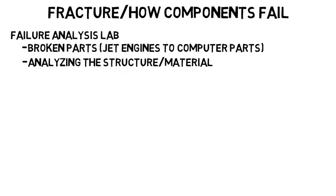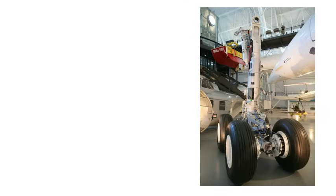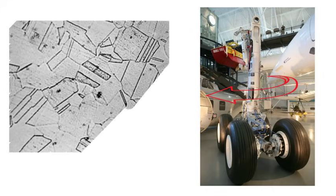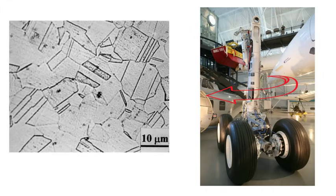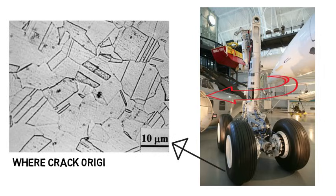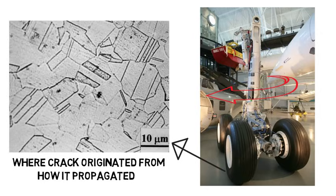The materials engineer who wrote this video with me had a job in a failure analysis lab where he had to look at the landing gear of a plane. The landing gear had a huge crack around it which almost broke it during landing. So he had to use a microscope and analyze the microstructure of the landing gear. This is a micrometer-scale picture, but tells us a lot. At this scale you can actually see where the crack originated from and how it physically propagated through the structure.